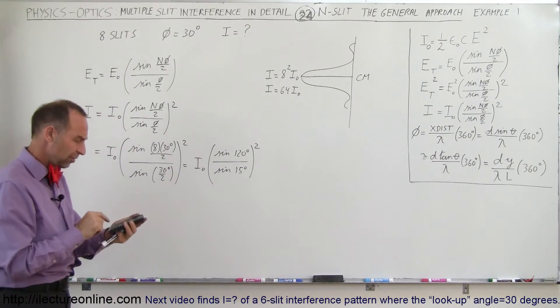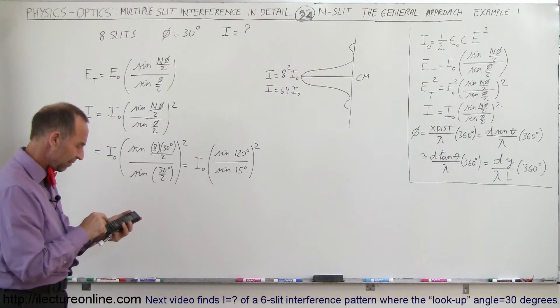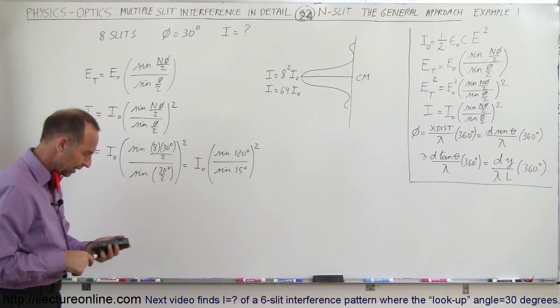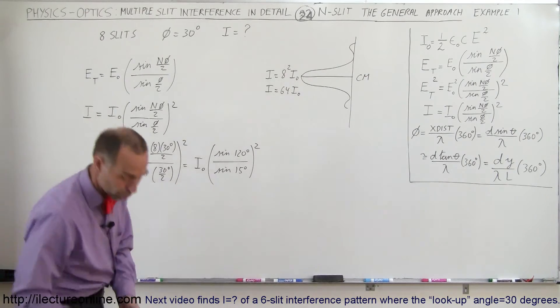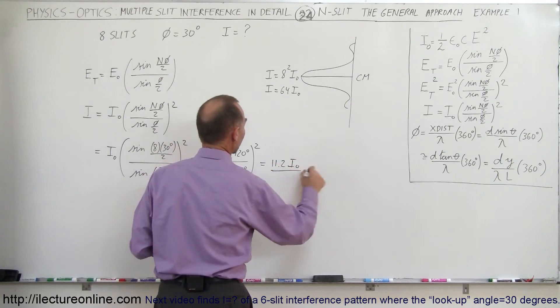So the 120 degrees take the sine of that and divide that by 15 take the sine of that, and square that number we get 11.2 rounded off to three numbers, so this would be 11.2 i sub-naught.